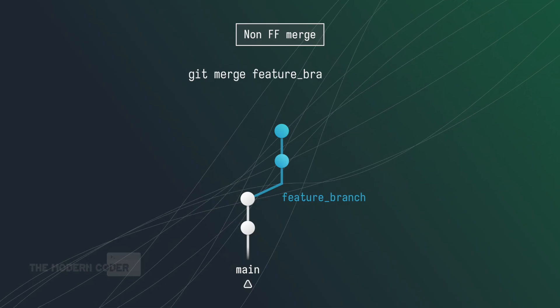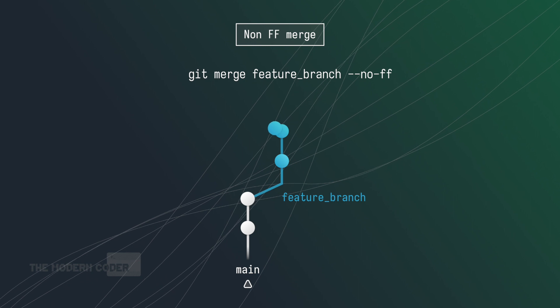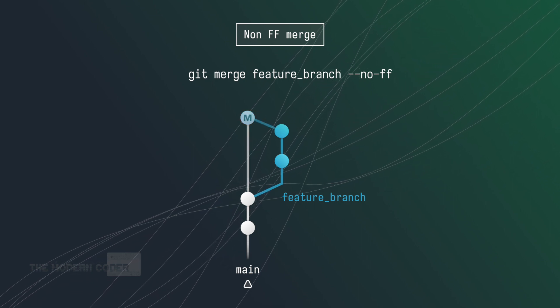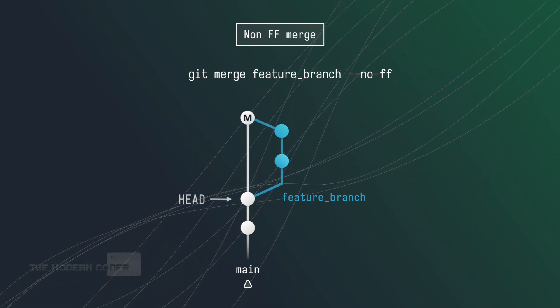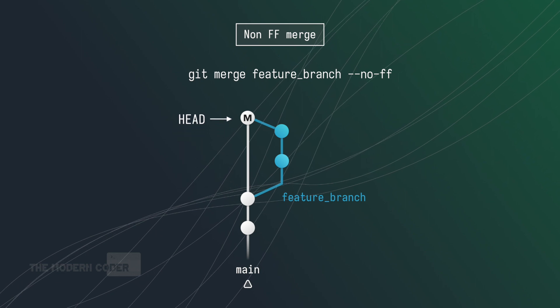What if you want to keep your feature branch intact for documentation purposes? You can always add the no-fast-forward flag, and you'll still get a merge commit on mainline, but it will keep your feature branch around so you can look back and see what commits were part of it originally.